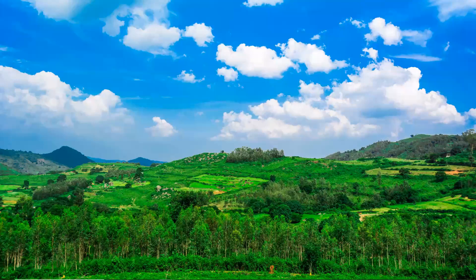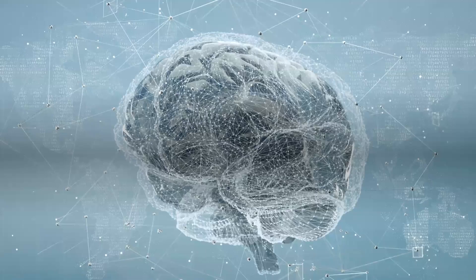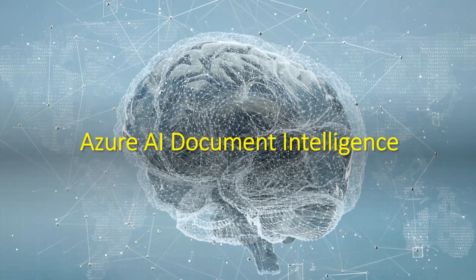Welcome back to BRR Knowledge Center. Today's session is about Azure AI Document Intelligence, a cloud-based Azure AI service similar to Azure Cognitive Services. It uses machine learning to extract text and structural elements from documents. This service is also known as Azure Form Recognizer, and has been renamed to Azure AI Document Intelligence. It extracts text and fields from documents based on the model you provide.